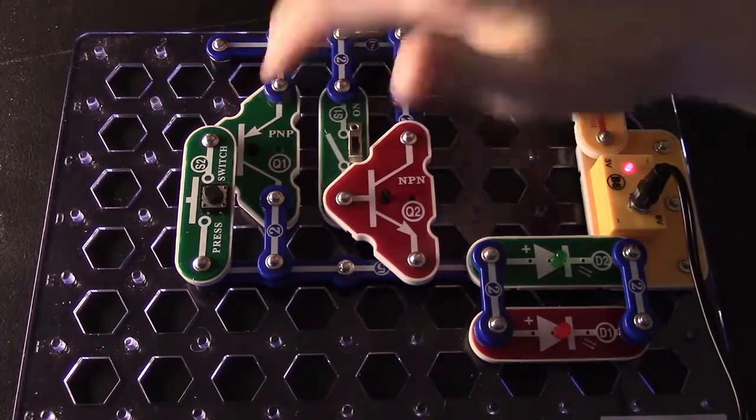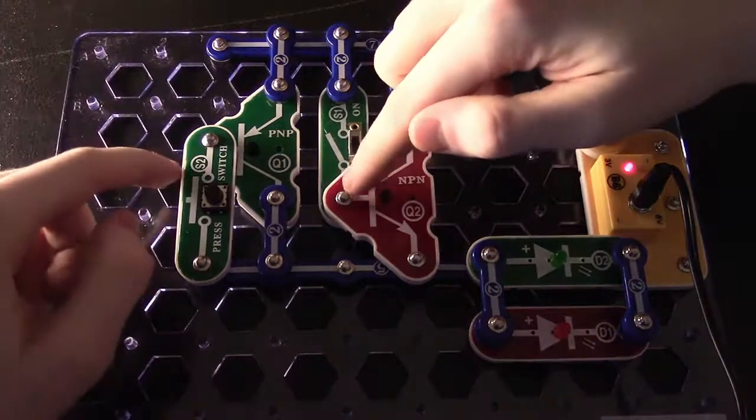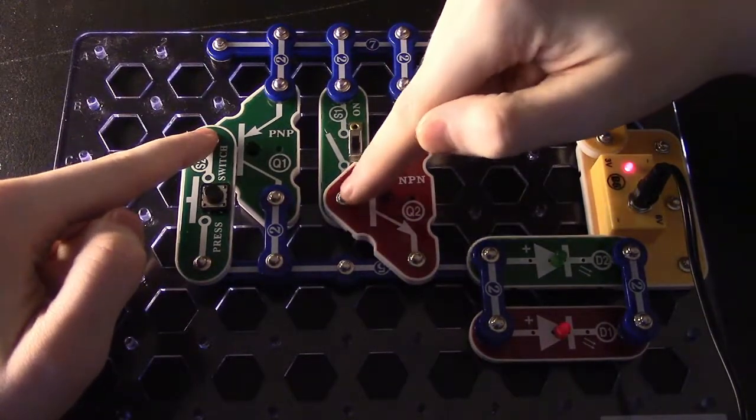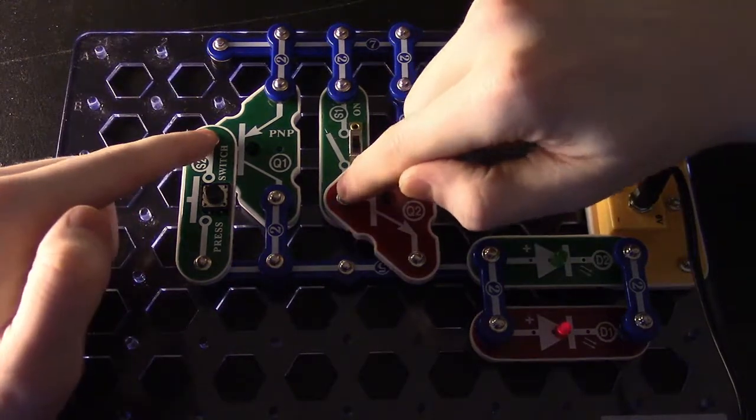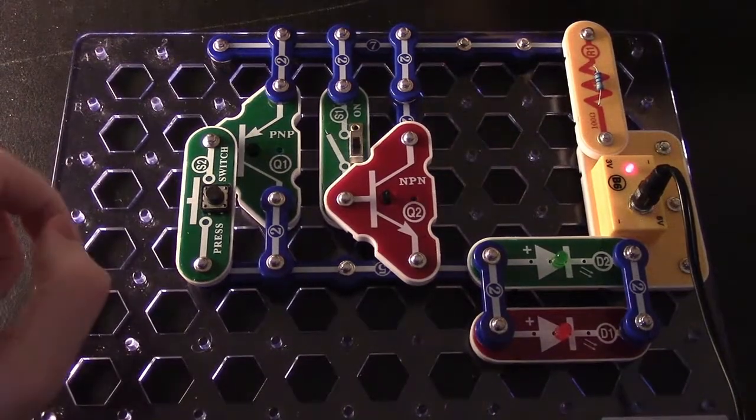The way this is, in either case, this section here on both our PNP and our NPN is called the base. The base is essentially what acts as the switch of the transistor.